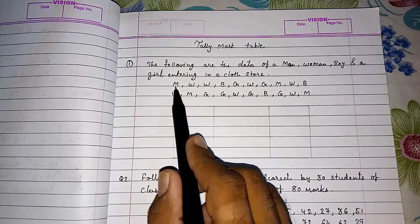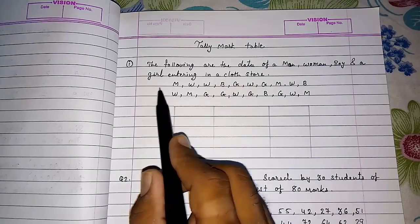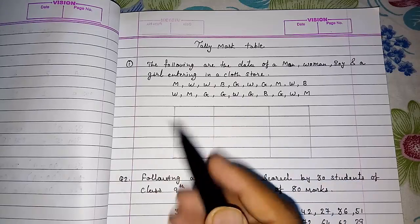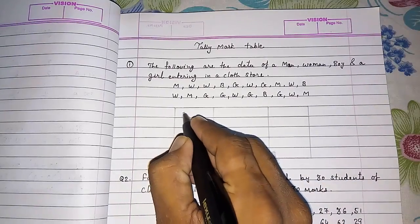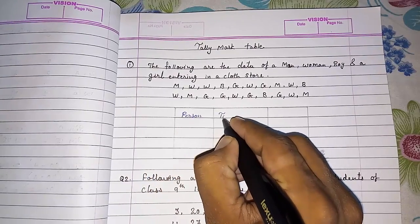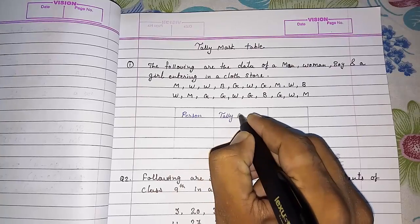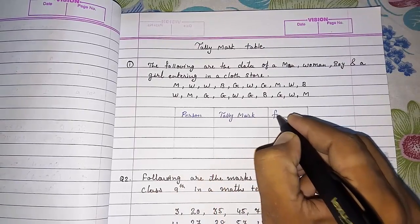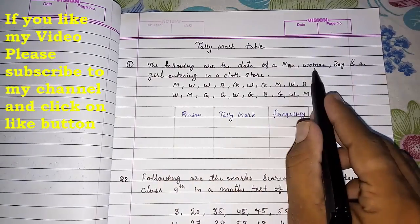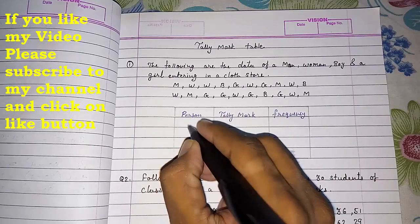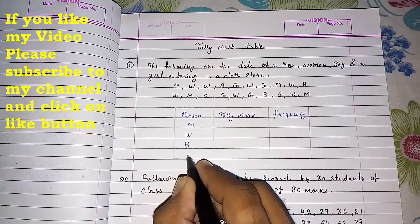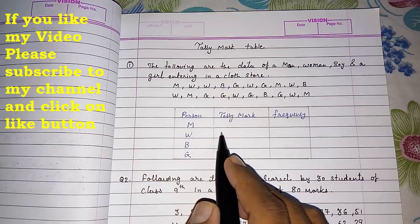The watchman had written these names. Now we have to arrange it systematically. We have columns for person, tally mark, and frequency. Man, woman, boy and girl. So M for man, W for woman, B for boy and G for girl. Now one by one we will do a tally mark here.